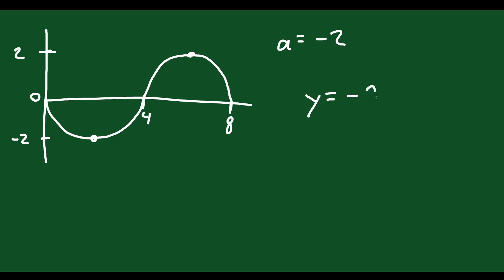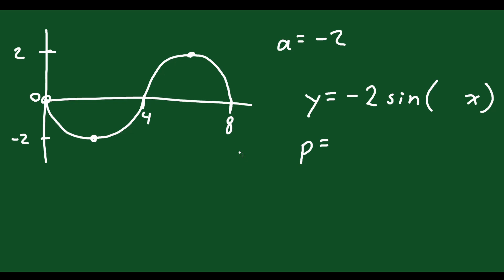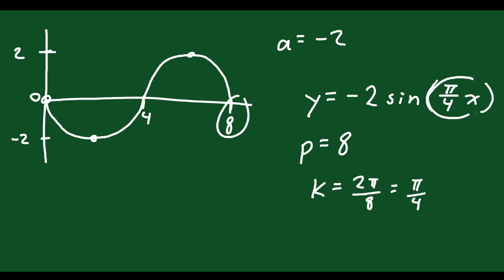So for this equation I'll say y equals negative 2 sine, and we need to figure out what goes in the bracket with x. The period looks like 8, so k equals 2π divided by 8, which is π/4. When you plug in 8 for x, 8 times π/4 gives you 2π — that's exactly what you want. So the final answer is y equals negative 2 sine(π/4 · x).